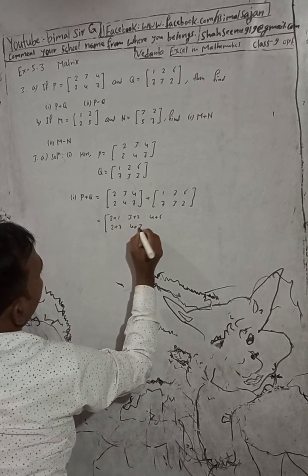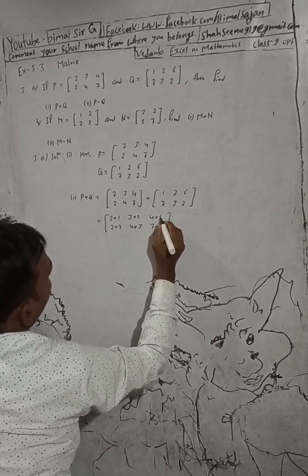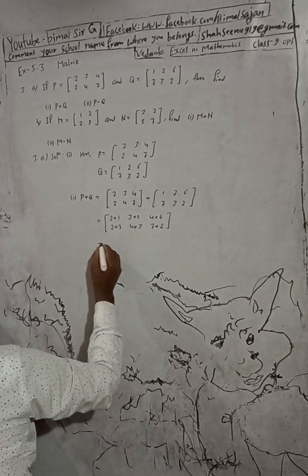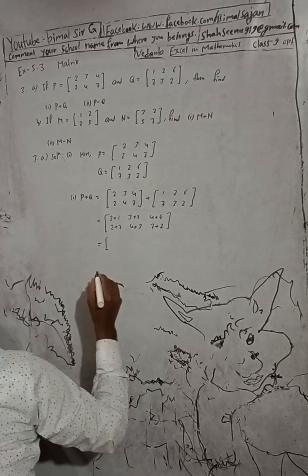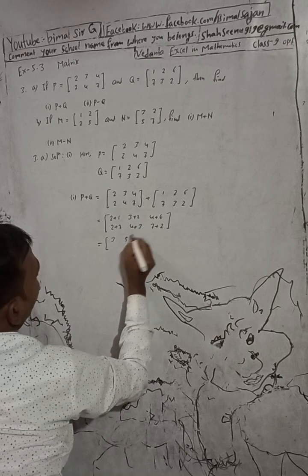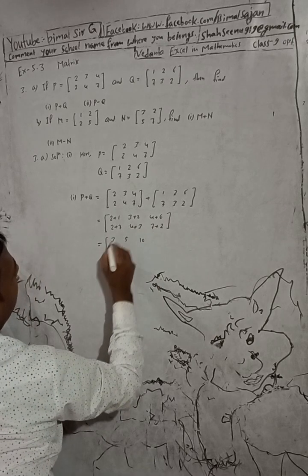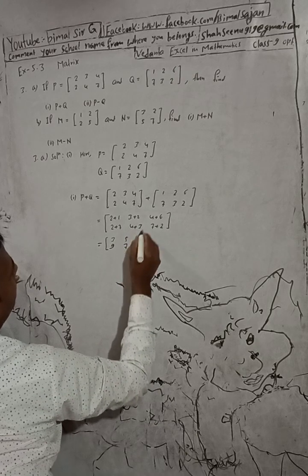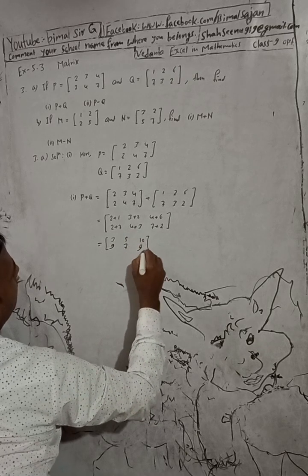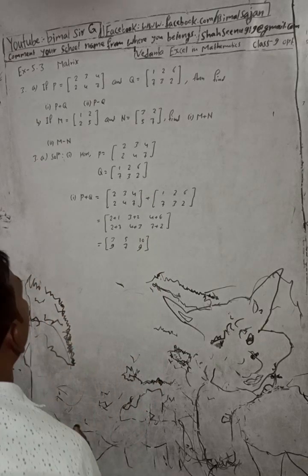Computing the sums: 2 plus 1 is 3, 3 plus 2 is 5, 4 plus 6 is 10, 2 plus 7 is 9, 4 plus 3 is 7, 7 plus 2 is 9. So the result is [3, 5, 10 / 9, 7, 9]. This is the solution of number 1.